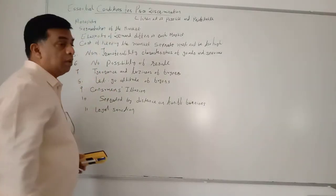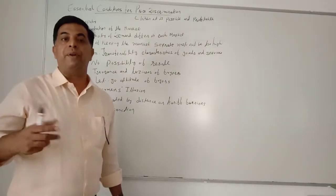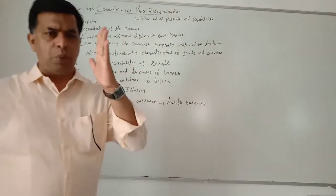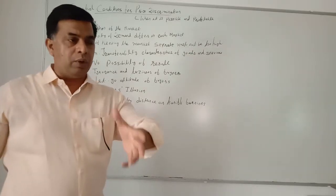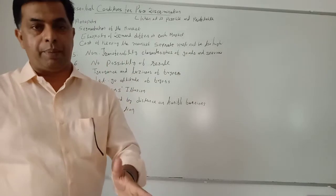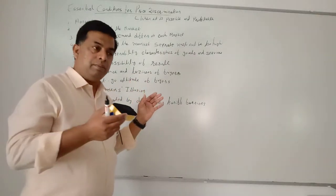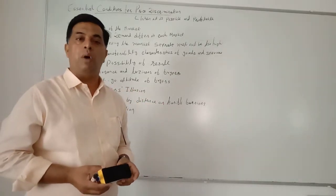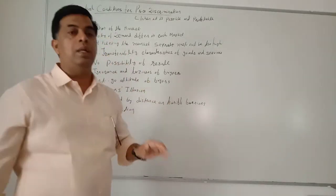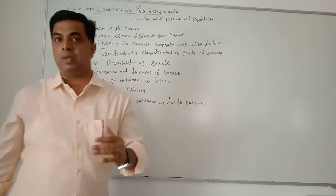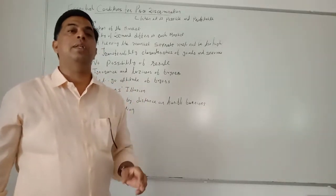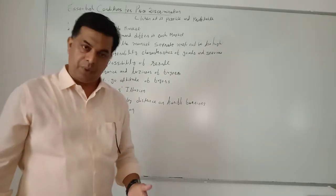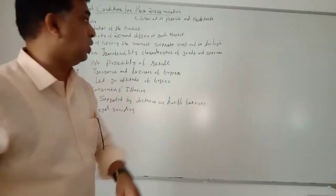The first and essential condition is monopoly. Price discrimination is not possible in perfect competition because in perfect competition there are large numbers of sellers in the market, and an individual firm occupies a very small part of the total market so it cannot influence market price. With perfect knowledge among buyers and sellers, if a firm tries price discrimination it will lose all customers. So the most important condition is a monopoly or near-monopoly situation. However, price discrimination can also be practised in imperfect competition like monopolistic competition and particularly oligopoly.